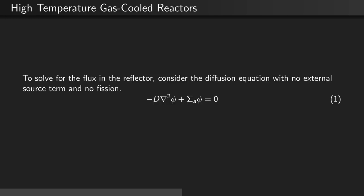To solve for the flux in the reflector, consider the diffusion equation with no external source term and no fission. In particular, the negative of the diffusion coefficient times the Laplacian of the flux plus the absorption cross-section of the material times the flux is equal to zero.